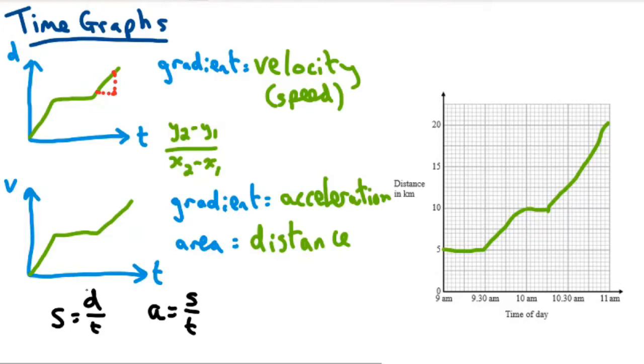But also, if we were to rearrange this first equation here, to just get it to distance equals. How you get distance on its own, you would have to move the t over the equals sign. When you do that, its sign changes. It becomes a times, so it's speed, times time equals distance.